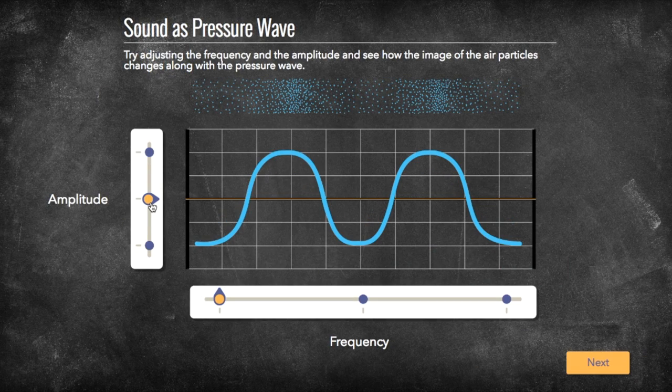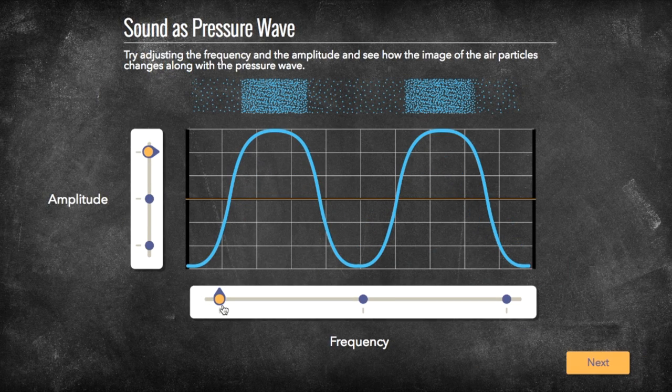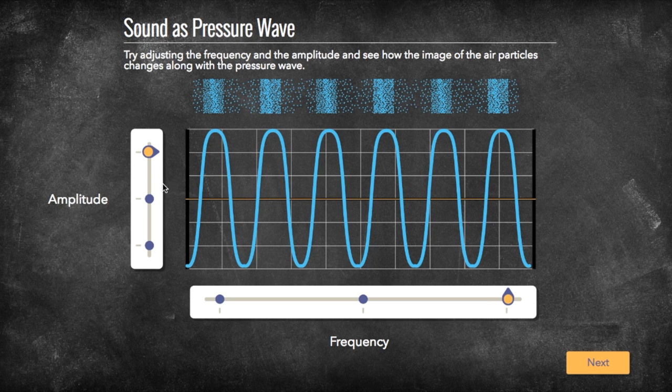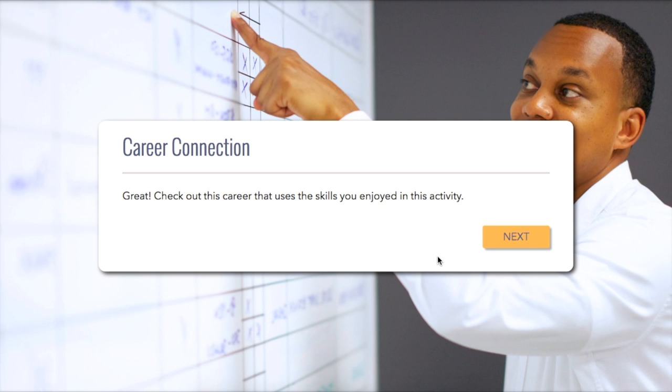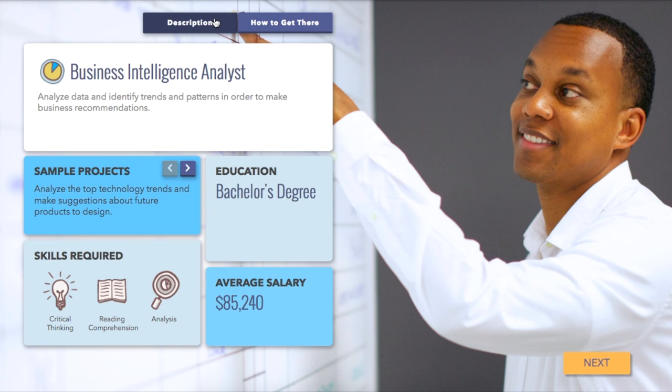By connecting core STEM concepts, such as probability and sound, to the sport of basketball, those connections become building blocks for carrying those abstract ideas to real-life application. Thank you for watching this overview of the Game Time course.